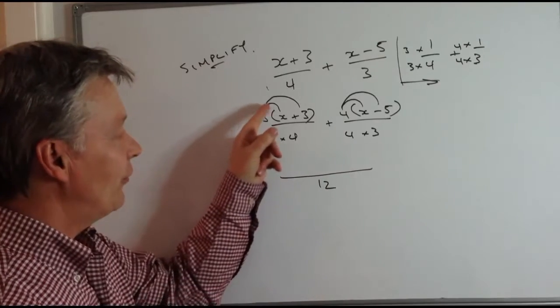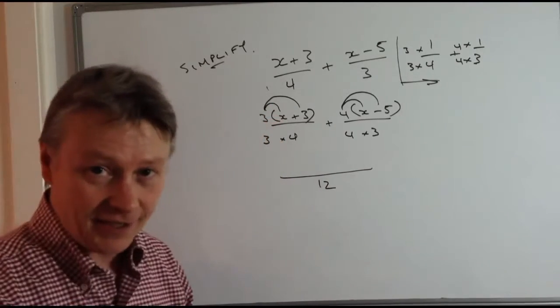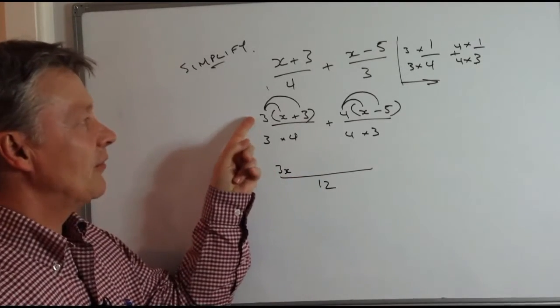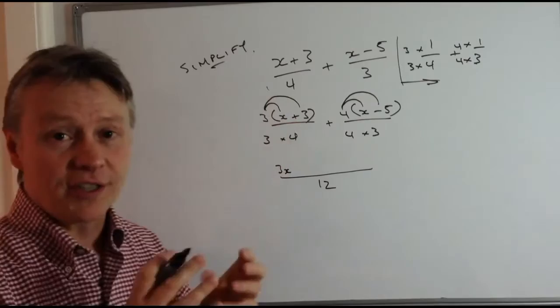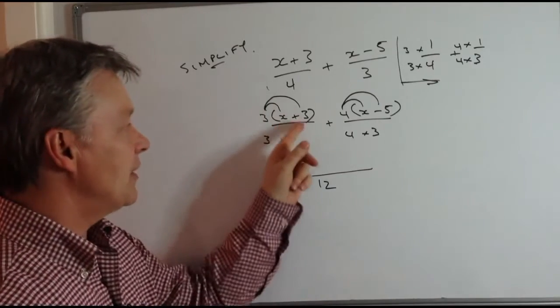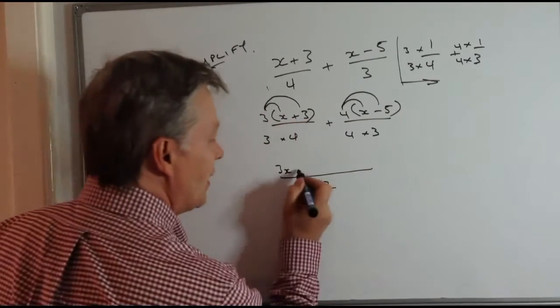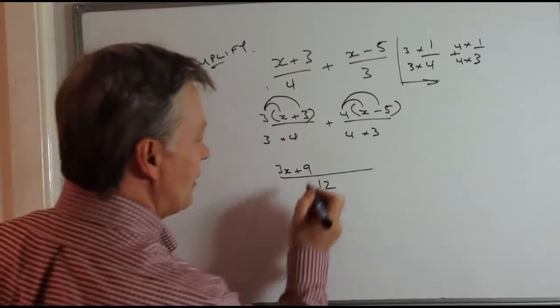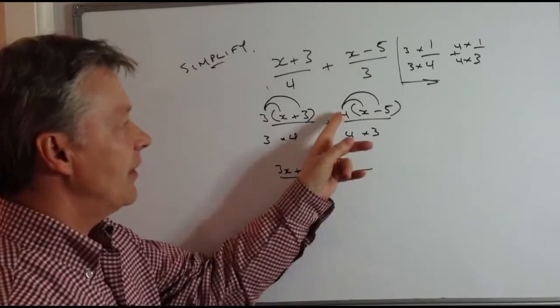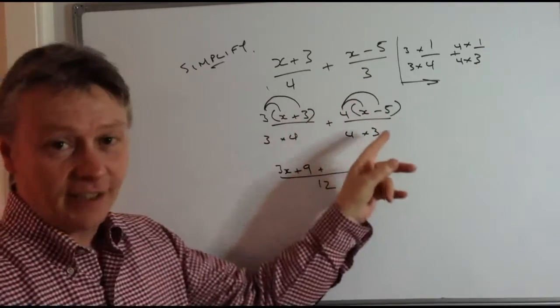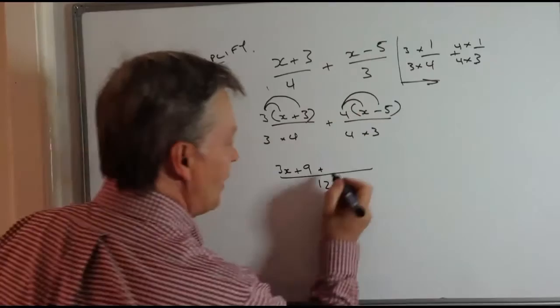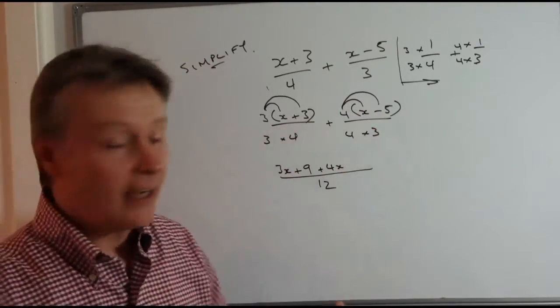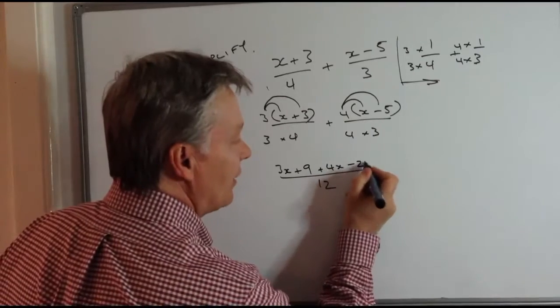The top one, I've got 3 times x, so I'm going to write that out as 3x. Then the next one, I've got 3 times positive 3. So 3 times positive 3 is positive 9. And then I'm going to add this to the expanded bracket here. So I've got 4 times x is 4x, and I've got 4 times minus 5, which is minus 20.